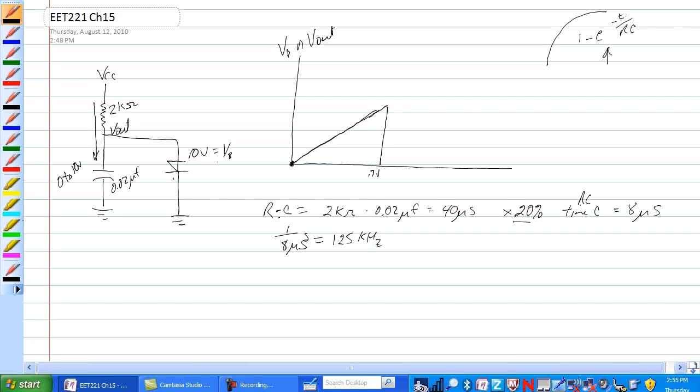Initially the current charges the cap. There is no current here. When the diode breaks over, like so, the current from all this charge from the cap is shorted to ground through this diode.